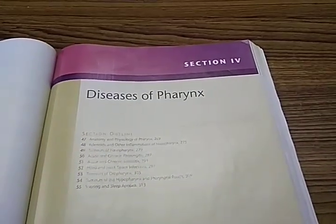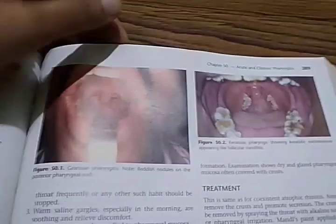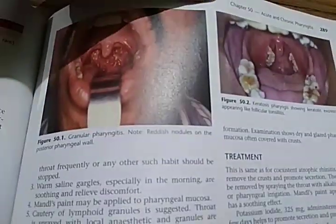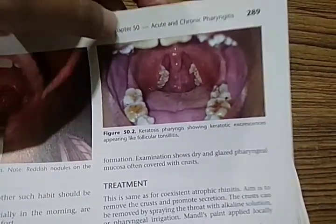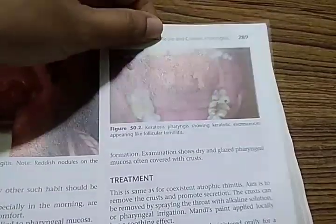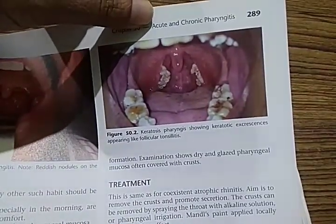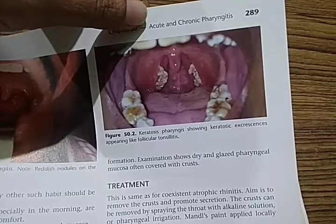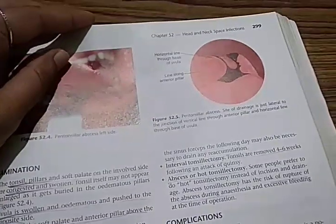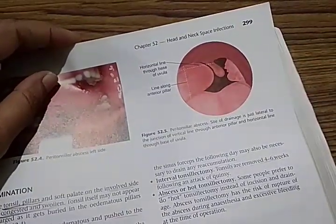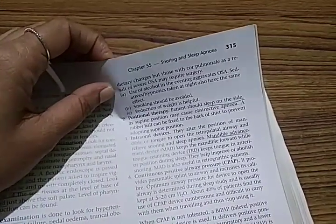Pharynx — we have reached the fourth section, diseases of pharynx. They are showing granular pharyngitis and keratosis pharyngis — keratotic material appearing like follicular tonsillitis. More than half the book is done. After pharynx they talk about head and neck space infections, and then snoring and sleep apnea.